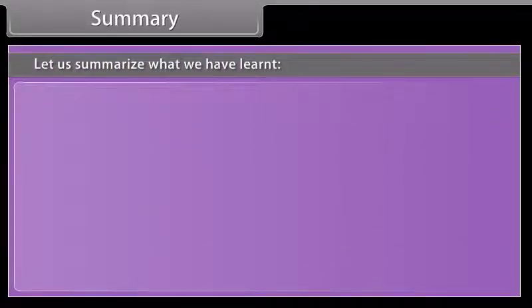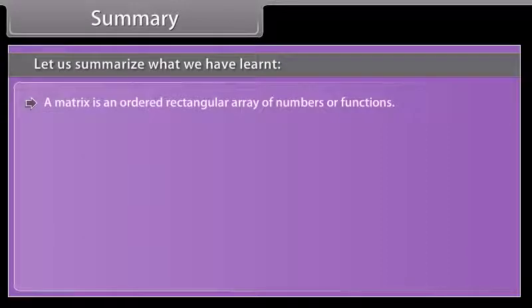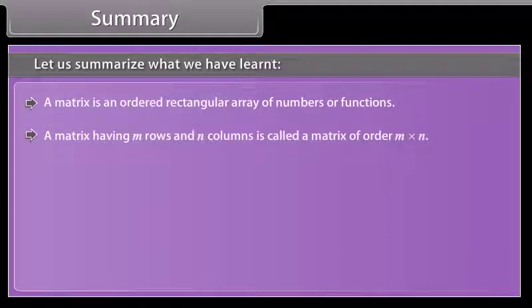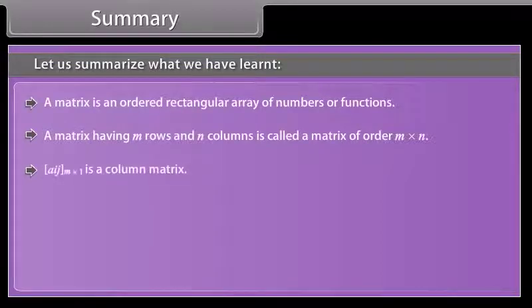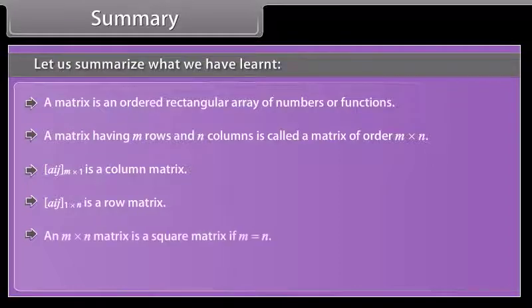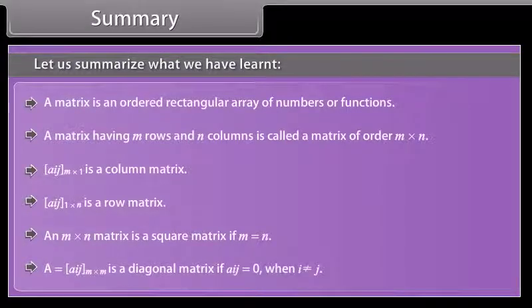Summary. Let us summarize what we have learnt. A matrix is an ordered rectangular array of numbers or functions. A matrix having M rows and N columns is called a matrix of order M by N. A matrix A_ij of order M by 1 is a column matrix. A matrix A_ij of order 1 by N is a row matrix. An M by N matrix is a square matrix if M equals N. A matrix A_ij is a diagonal matrix if A_ij equals 0 when i is not equal to j.